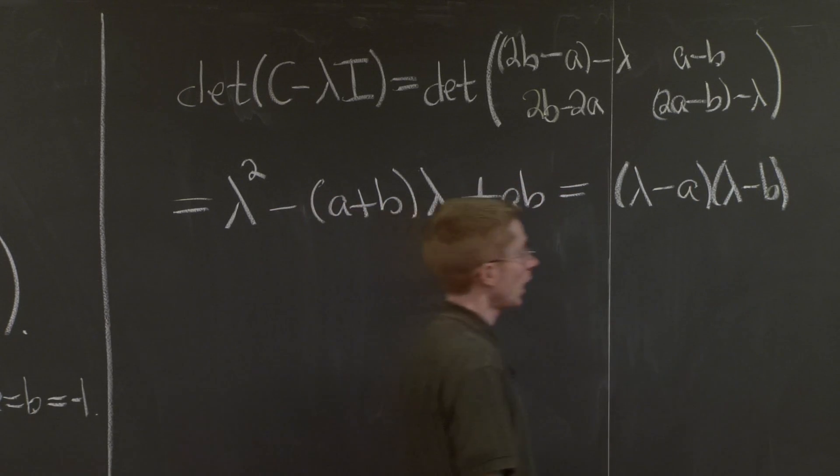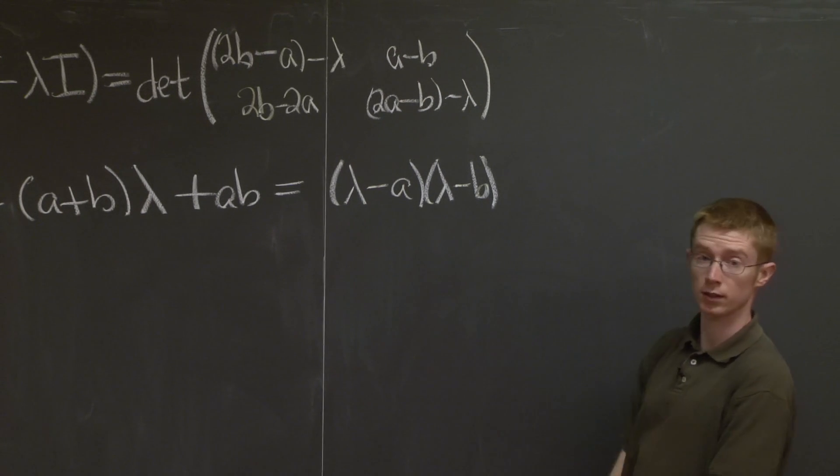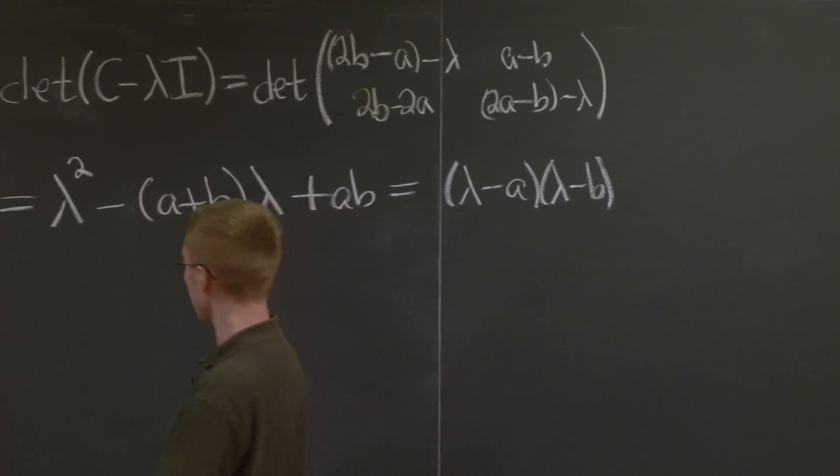Good. So our eigenvalues are just A and B. OK. Now we need to find our eigenvectors. So how do we do that?